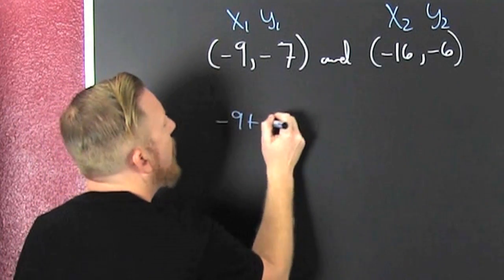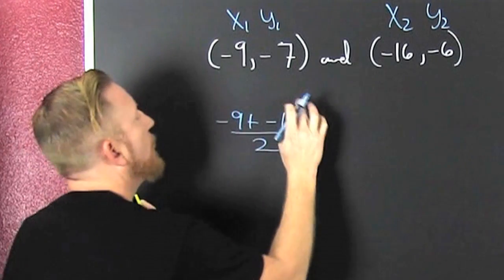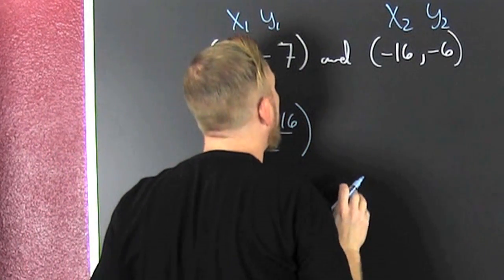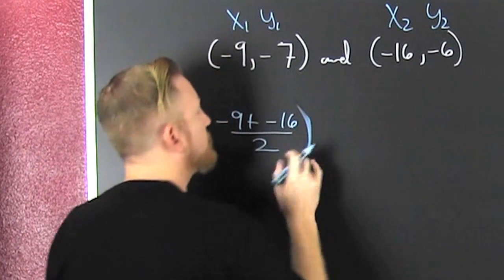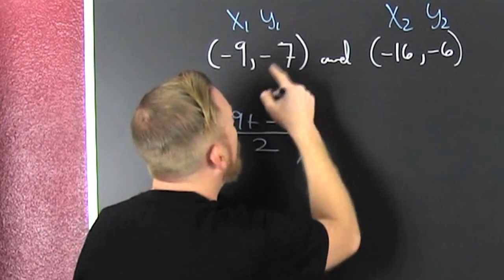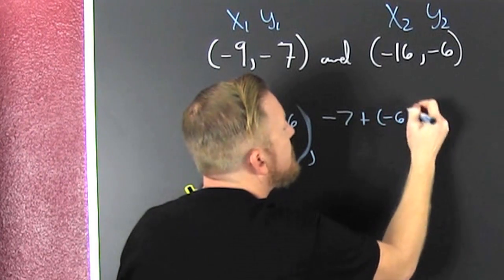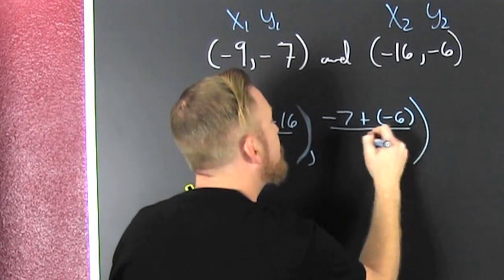I'm looking for a minus 9 plus a minus 16 all over 2. Oh. Yeah, ignore that. Should be a big comma. Big comma. Oh boy. And then that's a minus 7 plus a minus 6. Oh boy. Divided by 2.